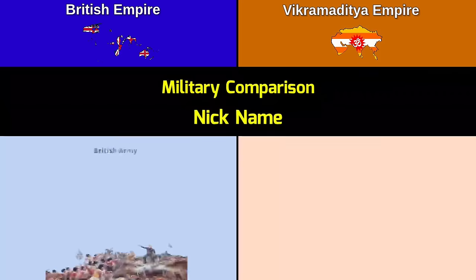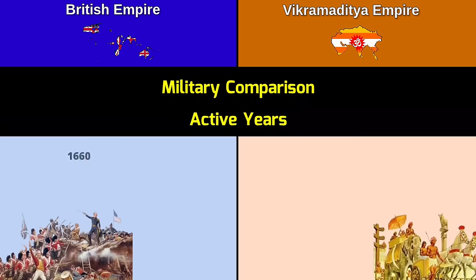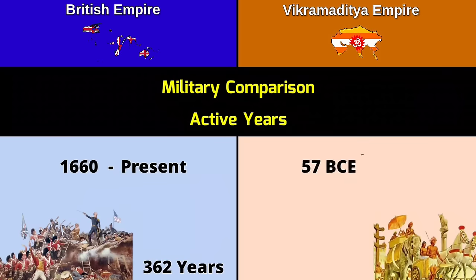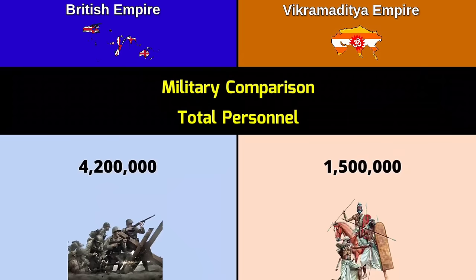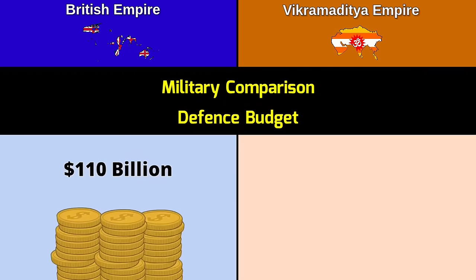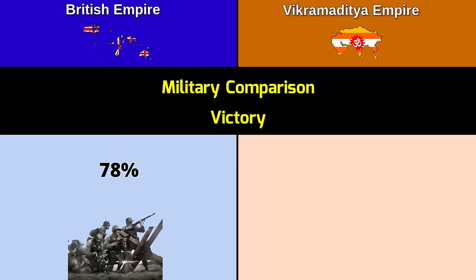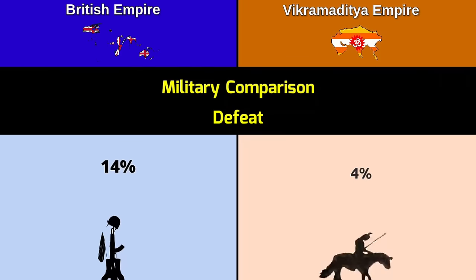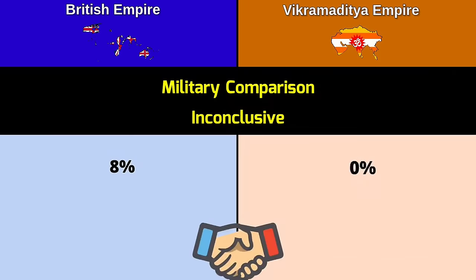Military comparison. Nickname: British Army versus Vikramaditya Army. Active years: British Army — 1662 to present, total 363 years; Vikramaditya Army — 57 BCE to 15 AD, total 72 years. Total personnel: British Empire — 4.2 million; Vikramaditya Empire — 1.5 million. Defense budget: British Empire — 110 billion dollars; Vikramaditya Empire — not known. Victory rate: British Empire — 78%; Vikramaditya Empire — 96%. Defeat rate: British Empire — 14%; Vikramaditya Empire — 4%. Inconclusive: British Empire — 8%; Vikramaditya Empire — 0%.